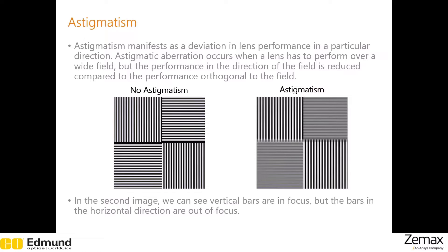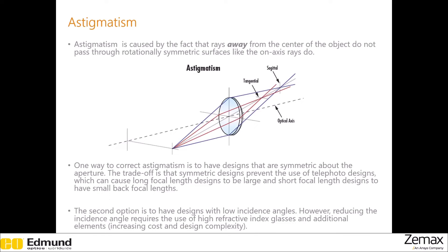The second aberration that we will discuss is astigmatism. This is an off-axis aberration and orthogonal axes have different focal planes. In the first image, there is no astigmatism and you can see both vertical and horizontal lines clearly. But in the second one, you cannot clearly see the horizontal lines. This is due to astigmatism, which occurs because off-axis rays do not go through rotationally symmetric surfaces like on-axis rays do.